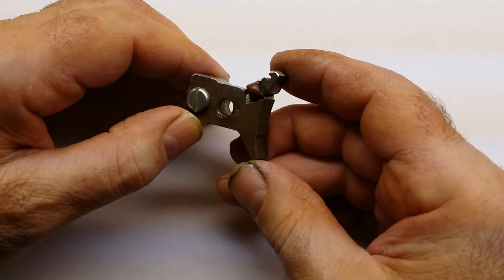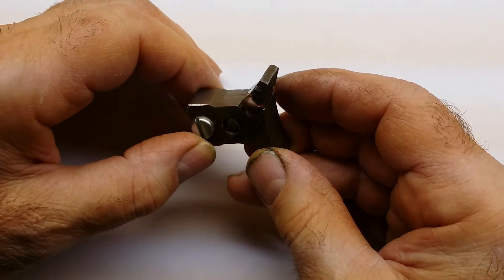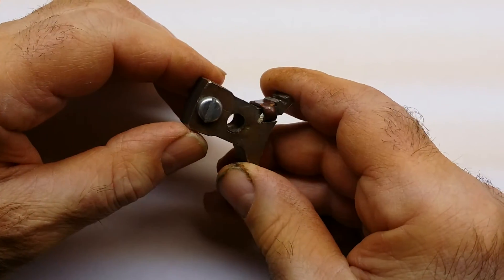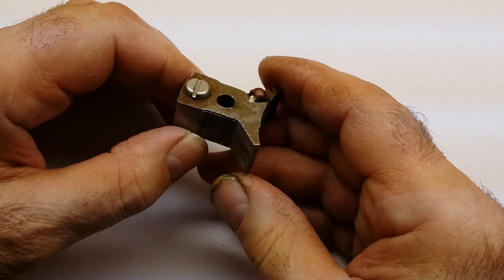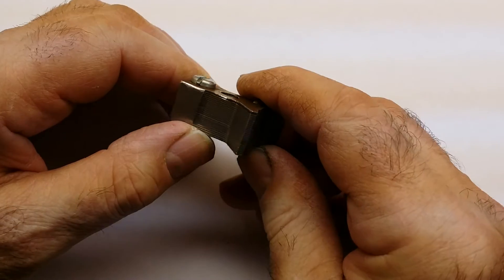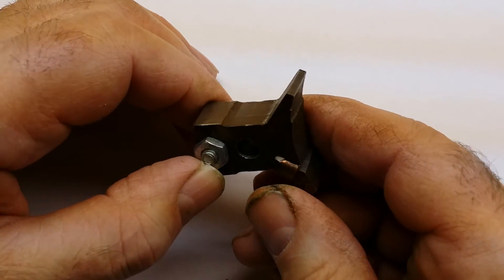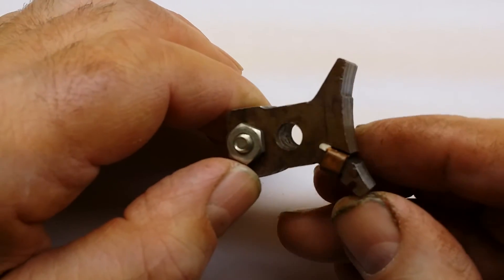Here we have an armature segment from a shaded pole motor. It is made up of laminated plates of mild steel, which basically means the steel does not retain any magnetism once the magnetic field is removed from the steel.